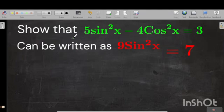Welcome to Math with GCSE Mathematics Zone. In this video, we are going to show that the trigonometric equation 5 sin squared x minus 4 cos squared x is equal to 3 can be written as 9 sin squared x is equal to 7.